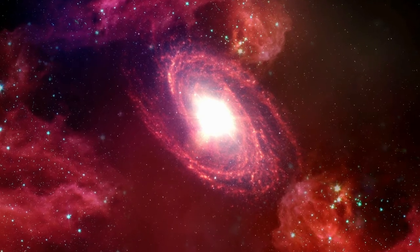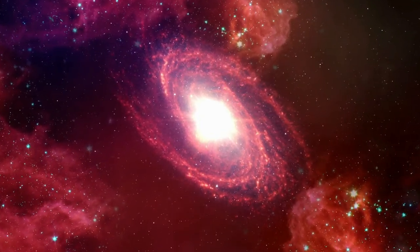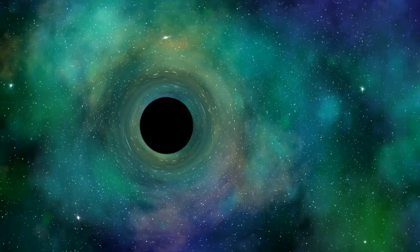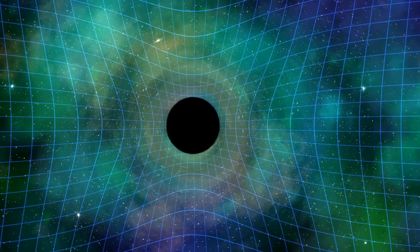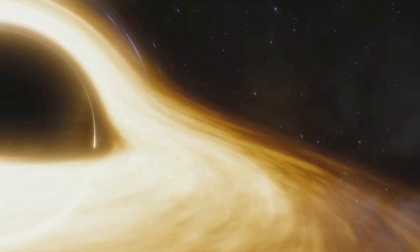When galaxies merge, their black holes sink to the middle of the newly formed galaxy and eventually join together to form an even more massive black hole. As the black holes spiral toward each other, they increasingly disturb the fabric of space and time, sending out gravitational waves.